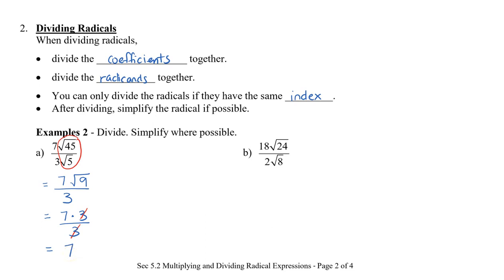In the second example, I do have coefficients 18 and 2, which can divide. So I'm going to divide 18 and 2, and that gives me 9. Then I'm going to divide √24 and √8, and that gives me √3. I can't simplify further because √3 is already in simplest form. So this is going to be 9√3.